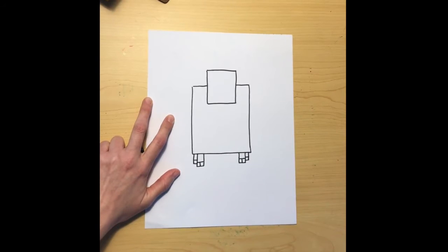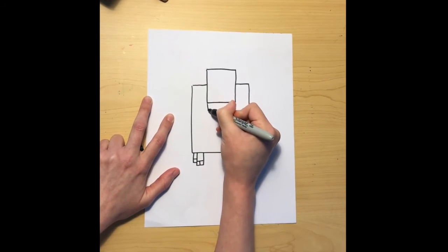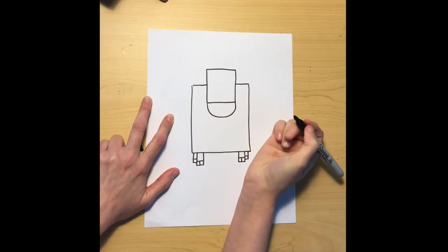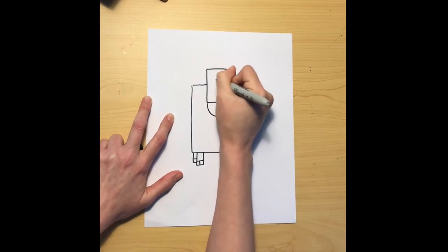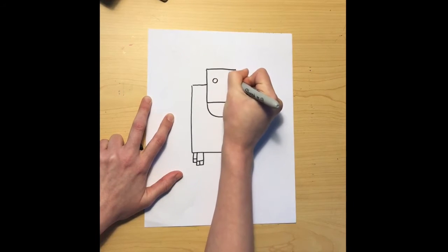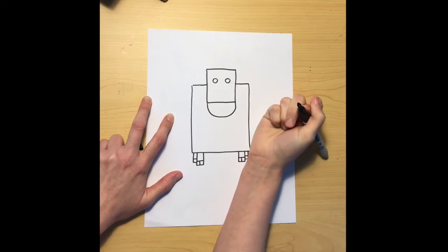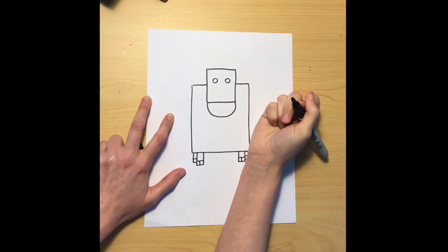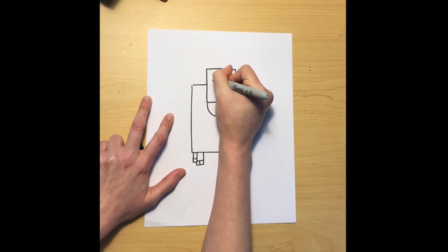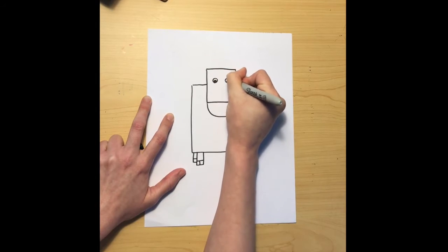Next we're going to work on the face again. Underneath our first square we're going to add a curvy line to make a half circle. Then we're going to add two eyes, and inside each eye we're going to add a darker circle.